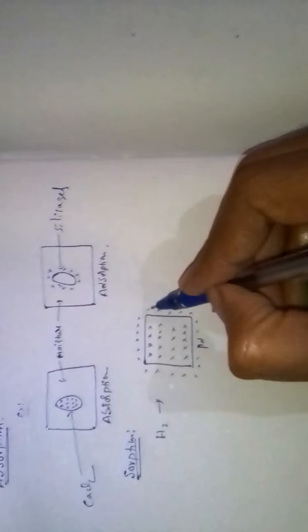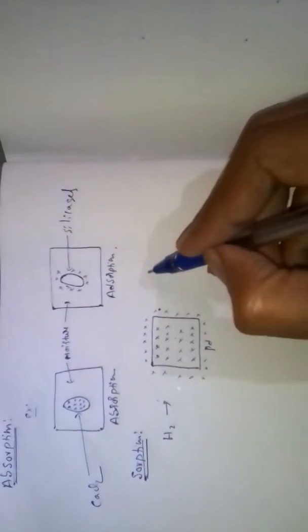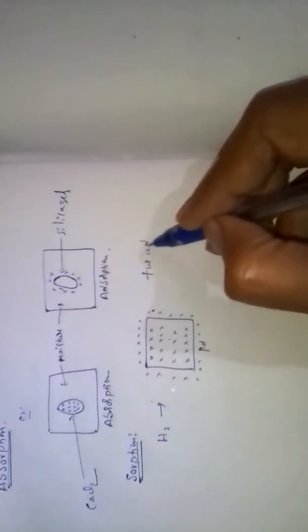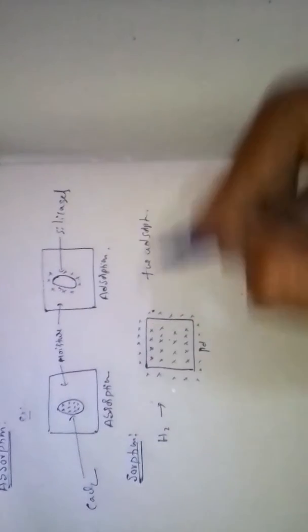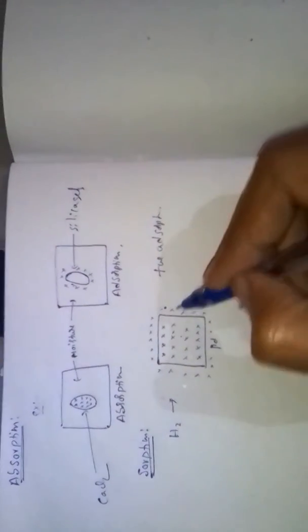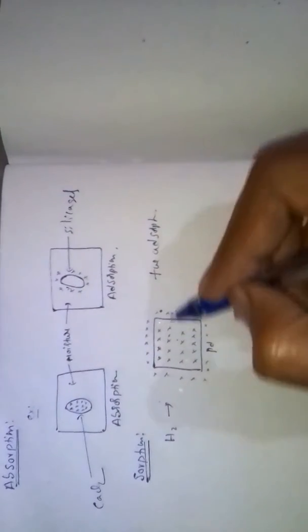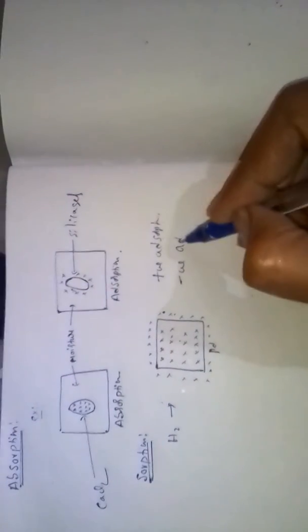In sorption, if surface molecules are higher than bulk molecules, that is called positive adsorption. If surface adsorbed molecules are less than bulk molecules, that adsorption is called negative adsorption.